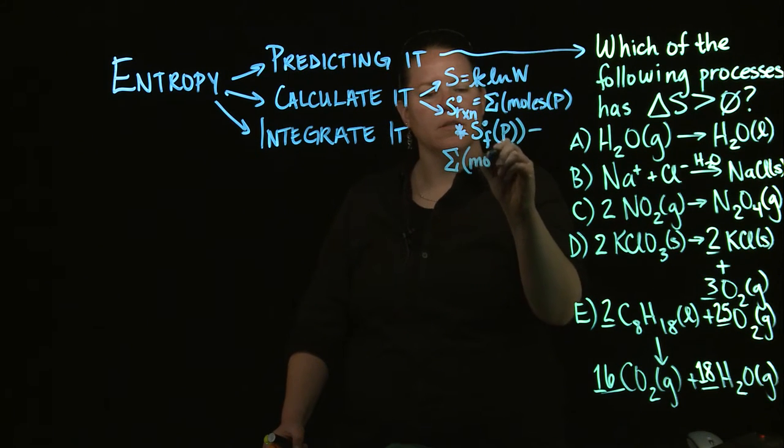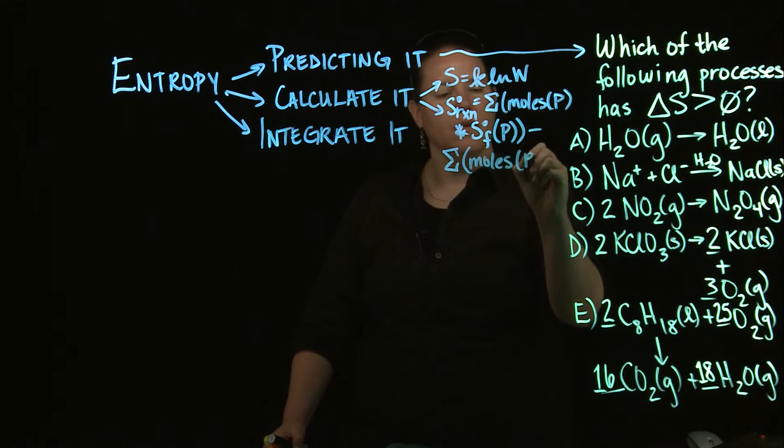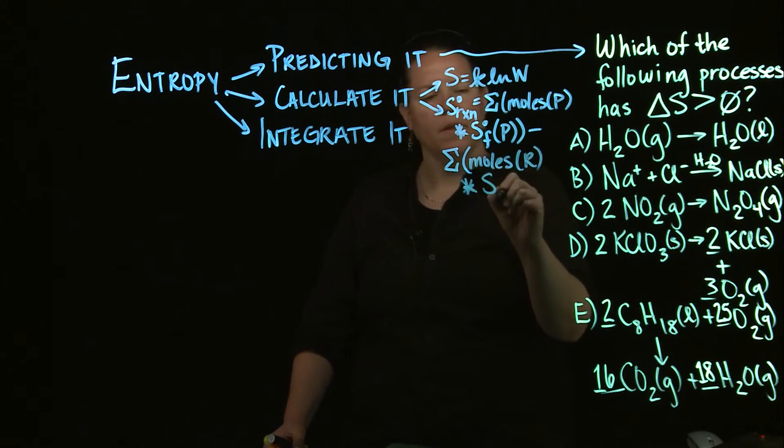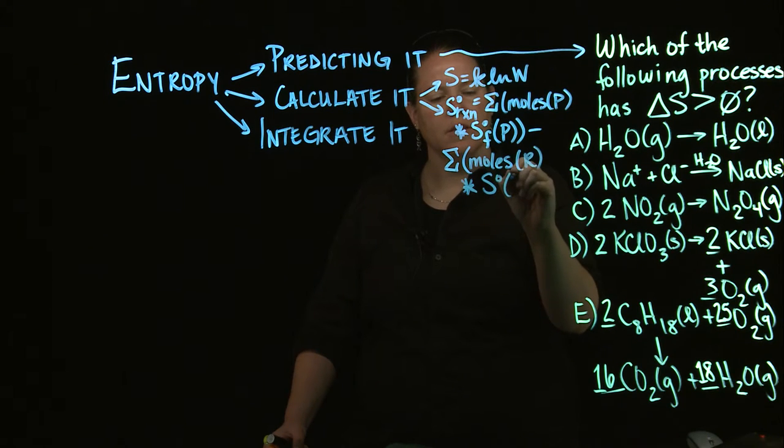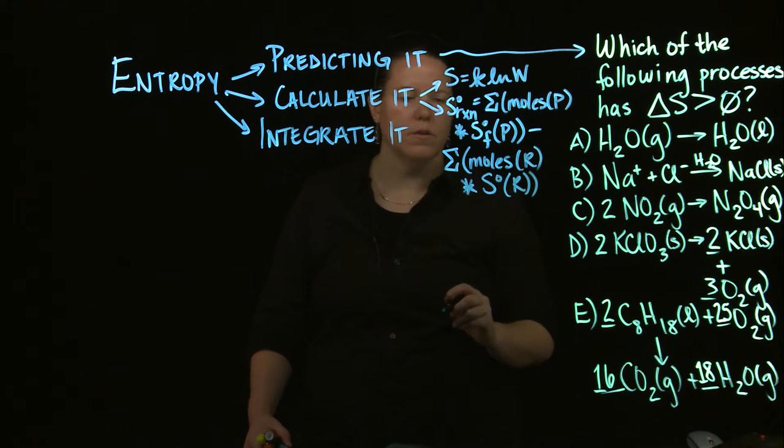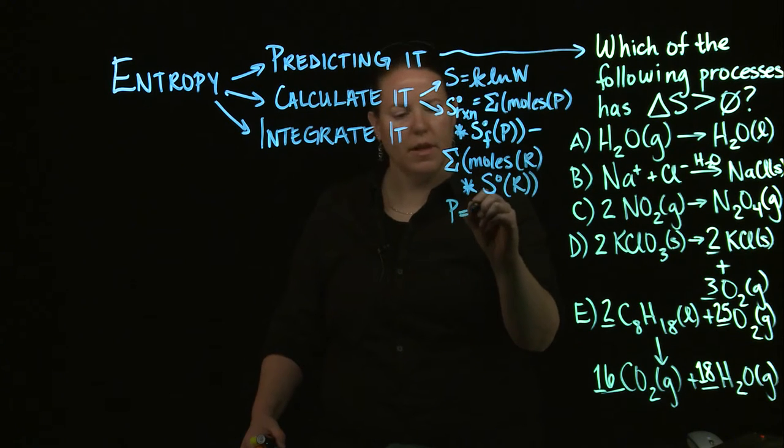They're just the entropy that's involved in that particular thing, so you may see it like this as well. Remember here, P is for products, R is for reactants.